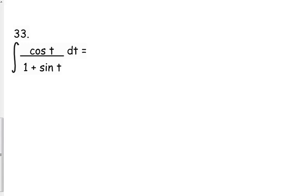Okay, number 33, we want to integrate the cosine of t over 1 plus the sine of t. Now again, it's a quotient. That should make us think, we've got to simplify it out bravely. We cannot.